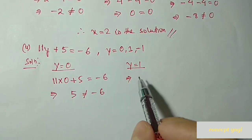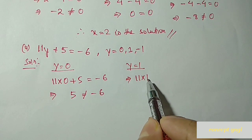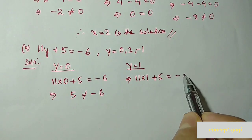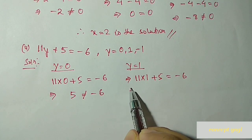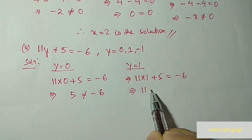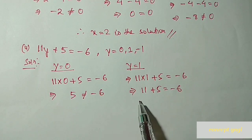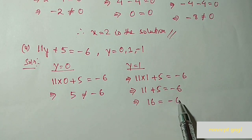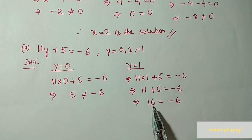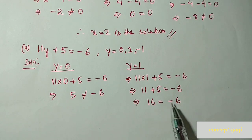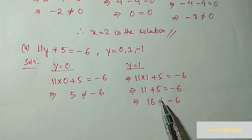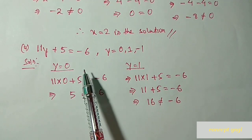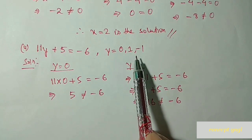Next we put y equal to 1: 11 into 1 plus 5 equal to minus 6. 11 into 1 is 11, and 11 plus 5 is 16. Left hand side is 16 and right hand side is minus 6 — they are not equal. So y equal to 1 is not the solution of this equation.